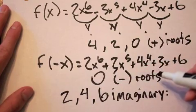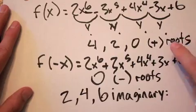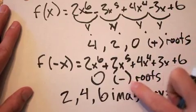Each combination adds up to six. This gives you the positive, negative, and imaginary roots.